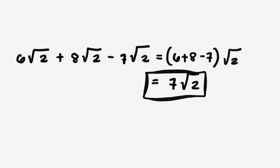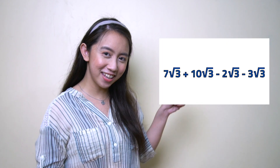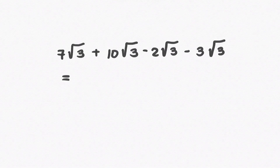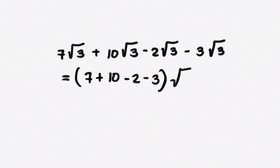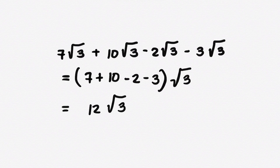Fantastic! Let's try adding and subtracting more radical expressions. Can you answer this? Let's try! In combining similar radicals, add or subtract its numerical coefficient and copy the common radical. Hence, the final answer is 12 square root of 3.